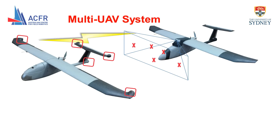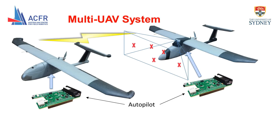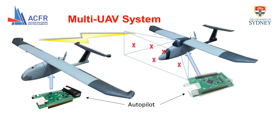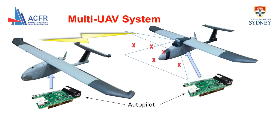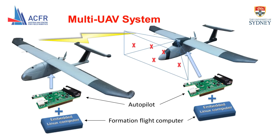Each UAV contains a custom built autopilot that's capable of fully autonomous operation. This module is responsible for the low-level guidance, navigation, and control, and is able to accept external commands. Even though this is not standard hardware nor officially supported, the Simulink-based algorithms are able to run onboard. Each UAV also contains a formation flight computer which handles communication with the other aircraft and runs the Simulink-based formation guidance and navigation algorithms.